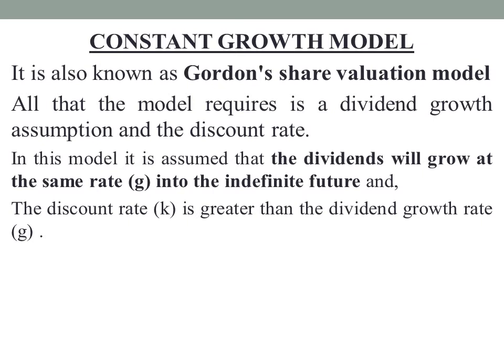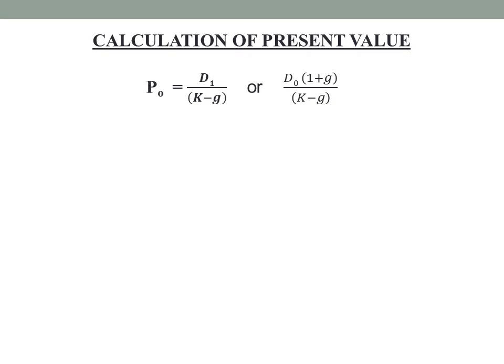We will now look at the calculation of the present value or intrinsic value under the constant growth model. The formula is: P0 = D1 / (K − G), or equivalently P0 = D0 × (1 + G) / (K − G). The main formula is P0 = D1 / (K − G), where D1 represents the dividend in the next future period.